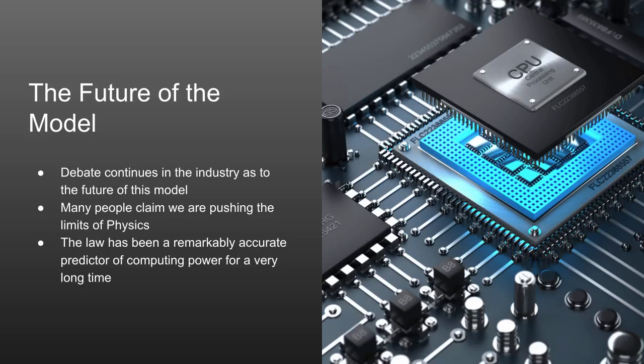The future of the model may not be quite so certain. A lot of people in the industry say we're pushing the laws of physics and that the trend just can't continue. But it has been remarkably accurate over time, and every time we think the model is going to fall apart, some new innovation comes along from chip manufacturers that keeps it back on track. At some point this will probably no longer hold, but for a remarkably long time Moore's Law has predicted the growth in processing power.